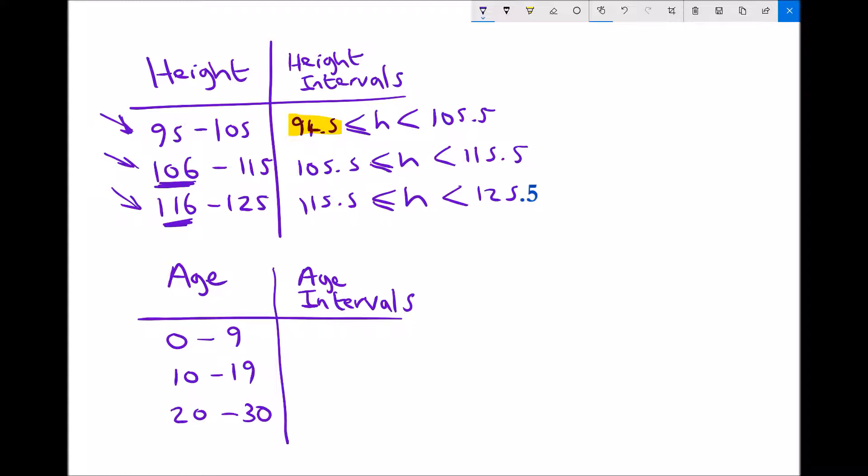Next we'll look at the age data. Now age data is slightly different. And the reason age data is different is because if you're 9 years old as an example, you'll be 9 years old right up until the very day when you turn 10.